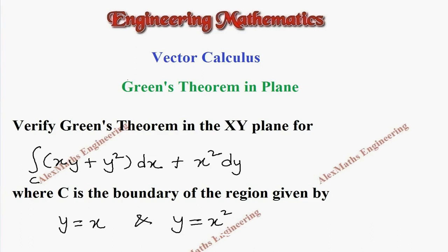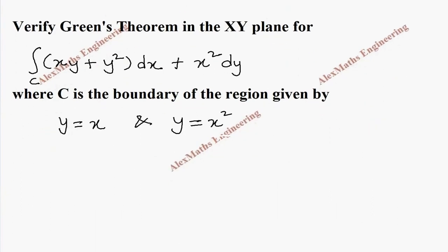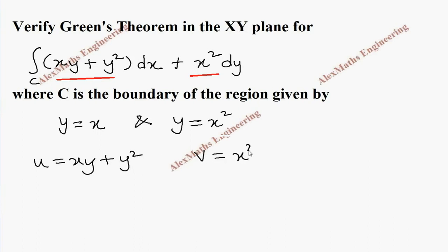Hi students, this is Alex here. In this video we are going to verify Green's theorem. From the question we take u and v: u equals xy plus y squared, and v equals x squared.